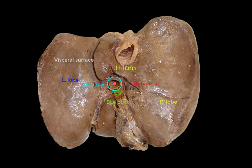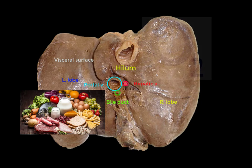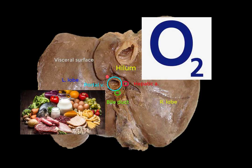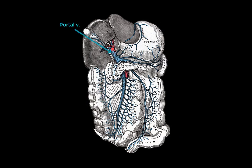The portal vein brings blood to the liver, as does the hepatic artery. But the blood brought by the portal vein is nutrient-rich and oxygen-poor, while that brought by the hepatic artery is oxygen-rich. You can see that most of the blood — 75% of the blood, as revealed by the sizes of the vessels — reaches the liver through the portal vein, and it contains the nutrients that have just been absorbed from the intestine. This is the portal vein reaching the liver.